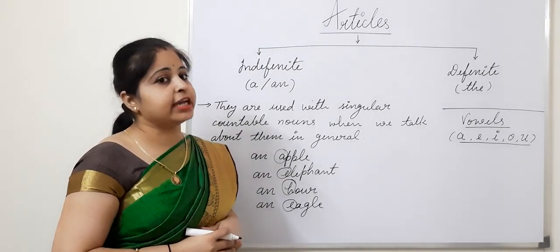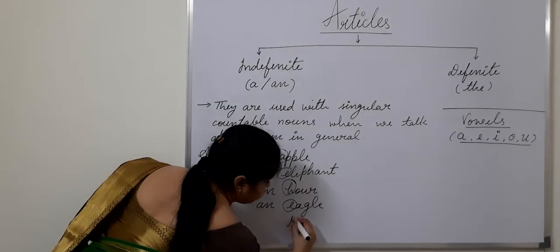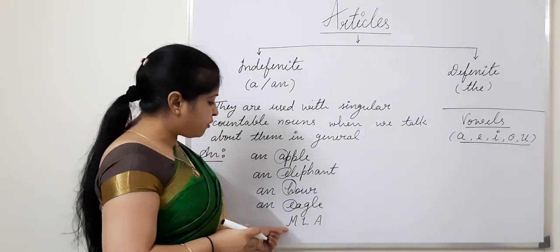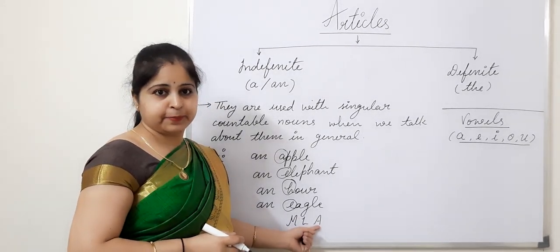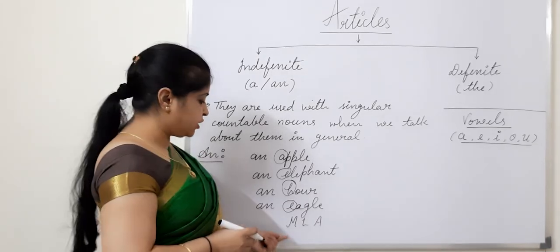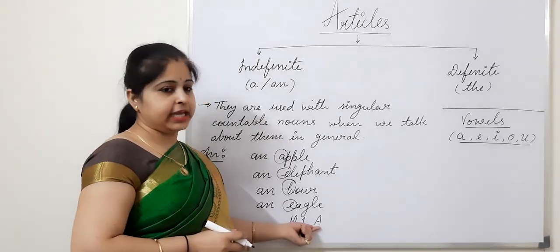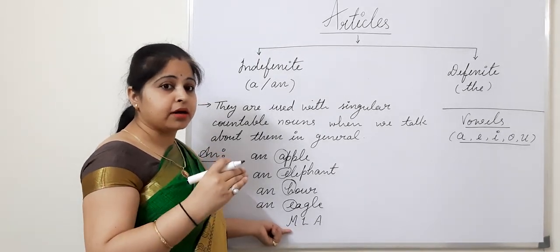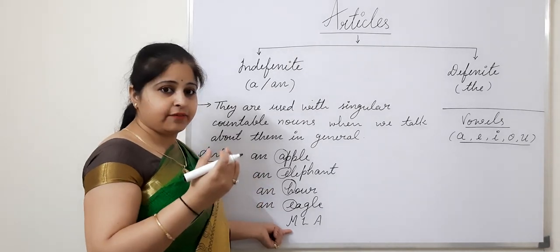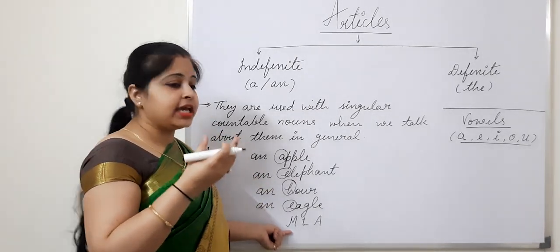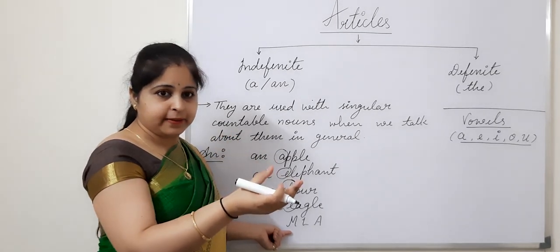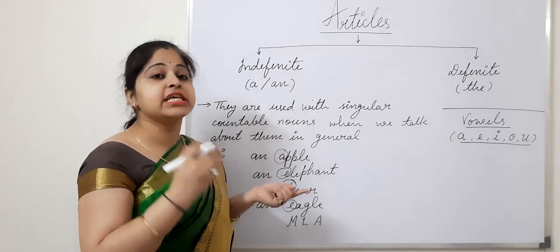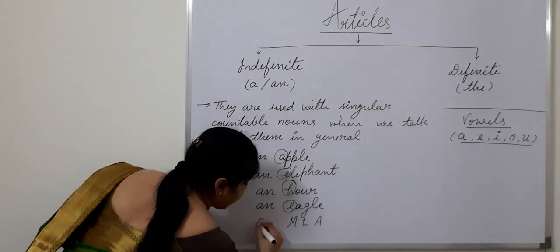Another example: MLA — Member of Legislative Assembly. When you pronounce this, you say M-L-A. It is having the sound of A at the very beginning, which is a vowel sound. So we will be putting 'an' before it: an MLA.